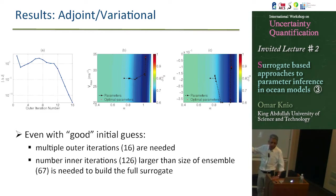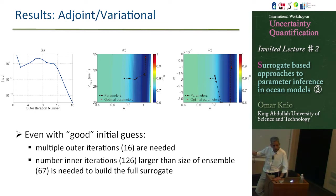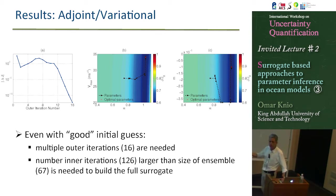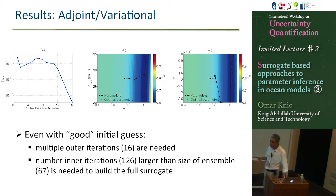Whatever we did on variational machineries or adjoint machineries, they really don't need to run on the model itself. If they can run on the surrogate, it's even better and it's really much faster. And whether the surrogate comes from polynomial chaos or whether it comes from an emulator, this is really a major advantage.